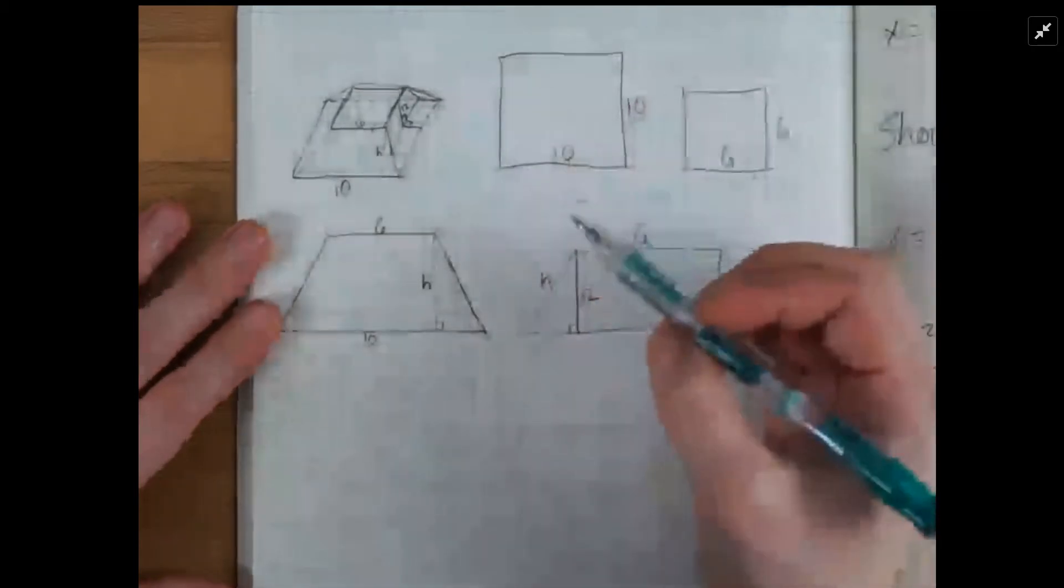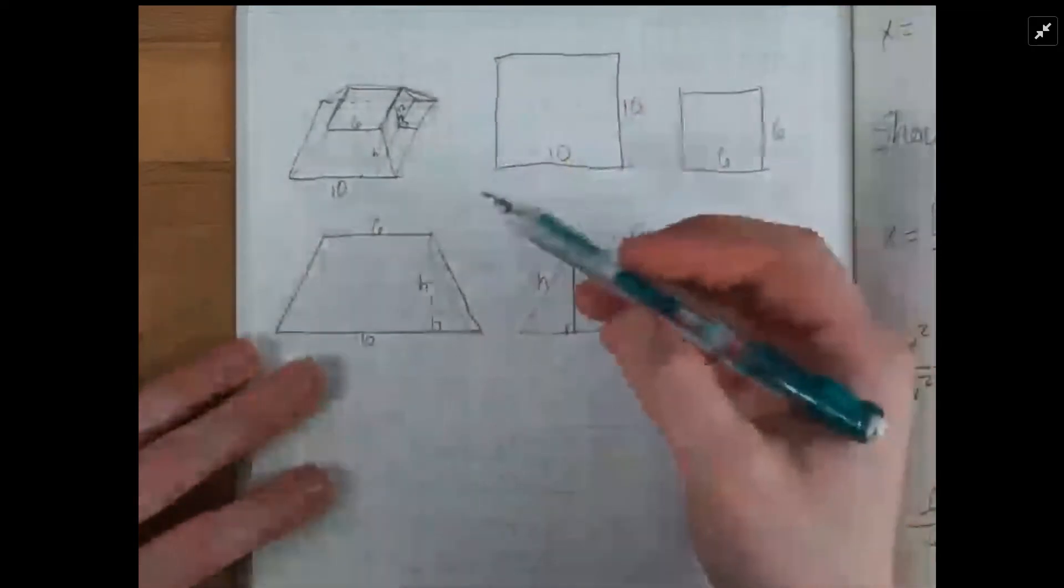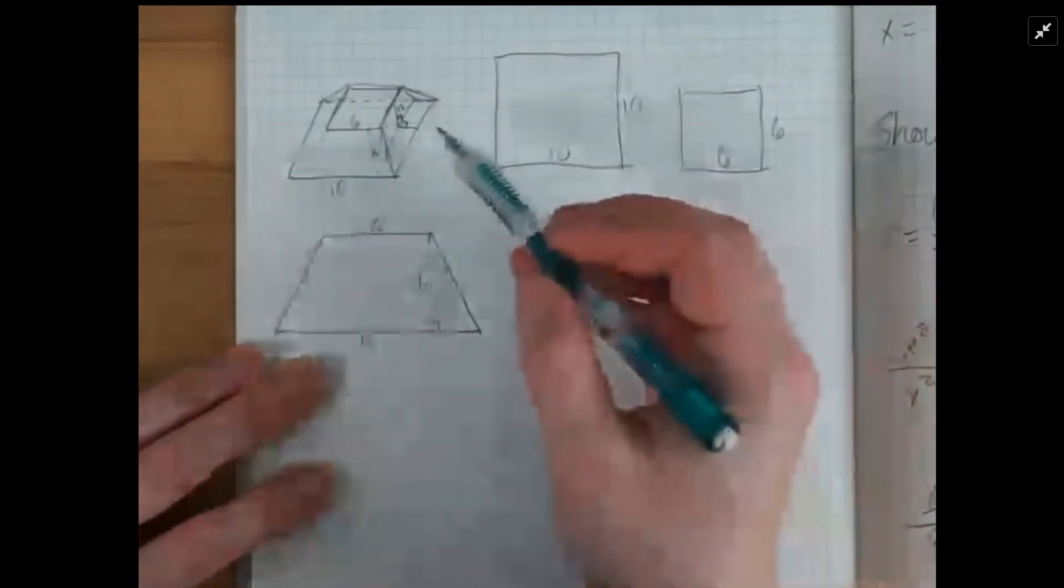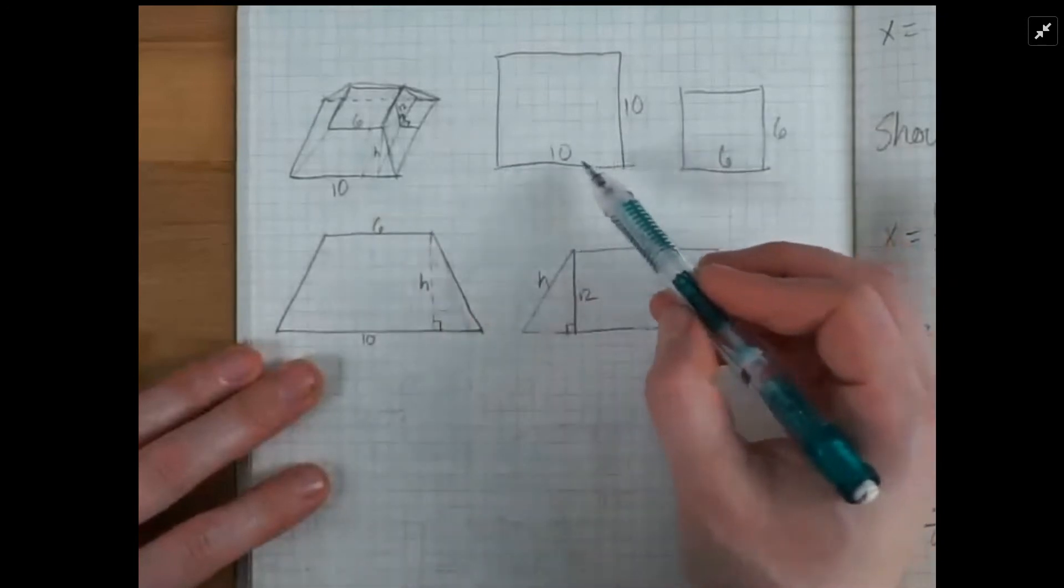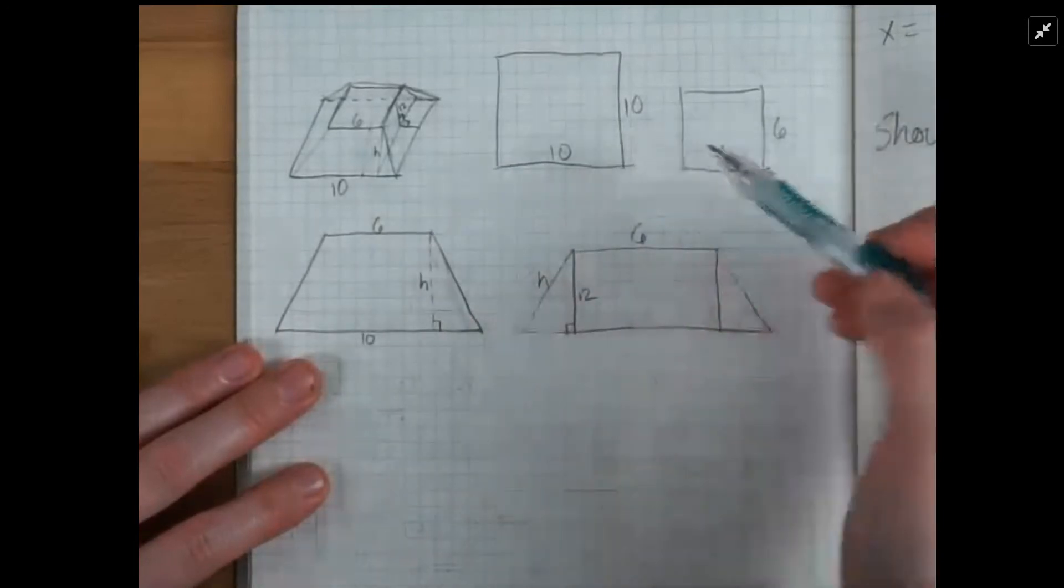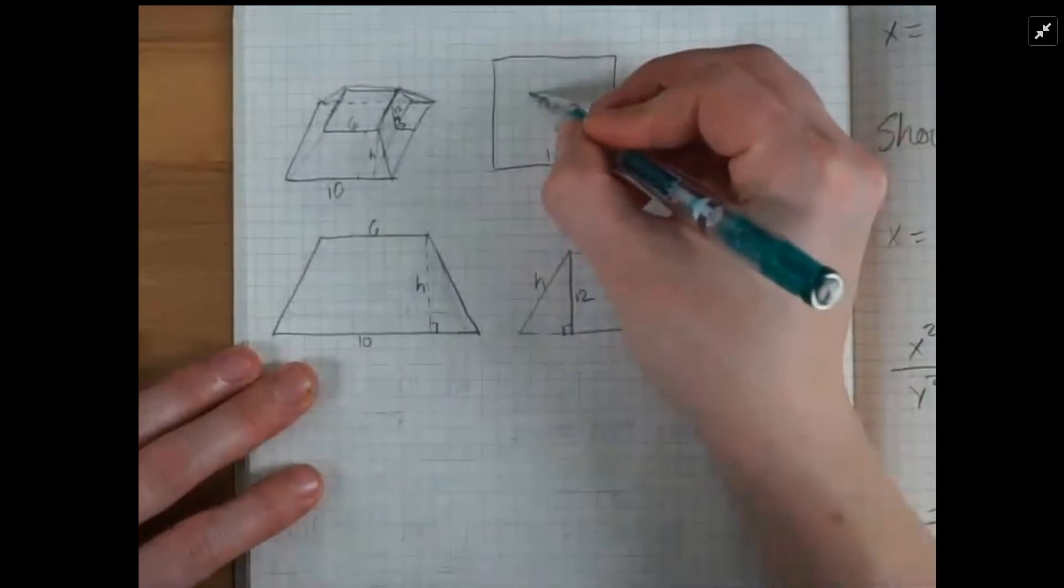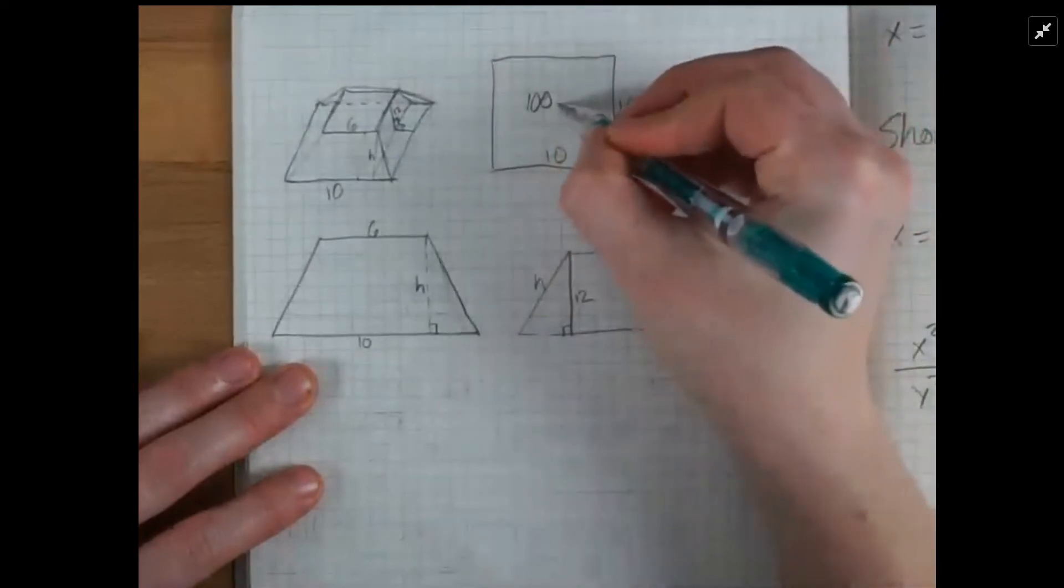So the question that we have is what is the surface area, the total surface area of this frustum? So the base is a square, 10 by 10. So that has 100 units squared.